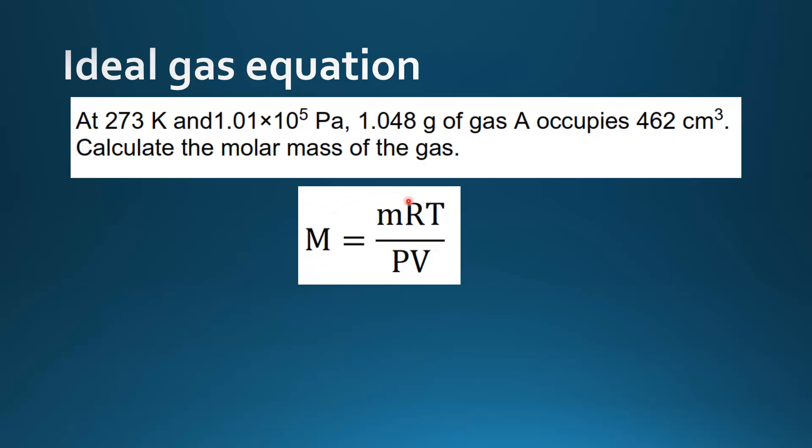We'll use this equation here because we want to find molar mass. So molar mass, big M, is equal to small m, which is mass in grams, times R times T divided by P times V.